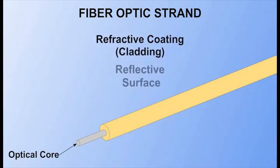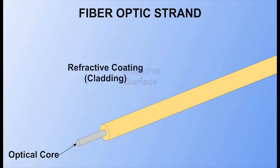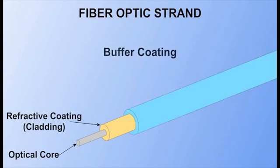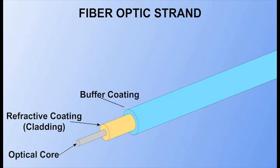which provides a reflective surface and causes the light to travel along the entire length of the core. The third layer is a buffer coating to protect against moisture and other damage. It also prevents light from escaping the strand and may have a color coating for identification purposes.